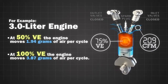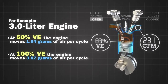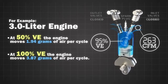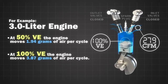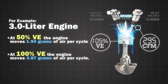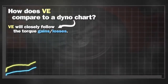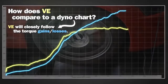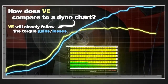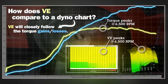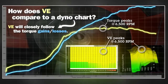The higher the VE, the more efficient the engine is, the more air it's moving, and thus it's making more power. You'll notice many times that your VE table looks a lot like your dynograph, and that's no mistake. The more air you're moving, the more torque you're going to make. A lot of times at peak torque, you're going to be right around 100% VE, and that's no coincidence.